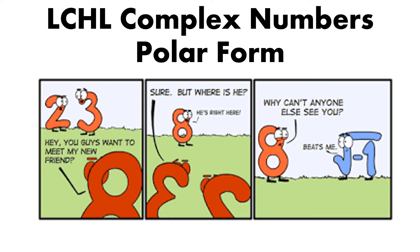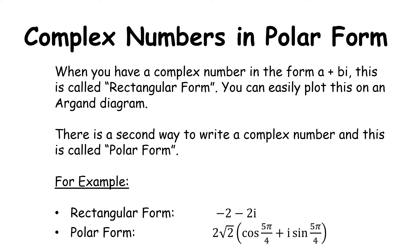Welcome to this Leaving Cert Higher Level Complex Number video on polar form. If you want to look at the introduction to complex numbers and how to work with them in rectangular form, I've linked the video in the description below. When we have a complex number in the form A plus Bi, this is called rectangular form. We can easily plot this on the Argand diagram. There is a second way to write a complex number and this is known as polar form. For example, rectangular form minus 2 minus 2i becomes polar form 2 root 2 times the bracket cos of 5pi over 4 plus i sine 5pi over 4. Don't panic — we're going to go deeper into where that comes from and what it represents.